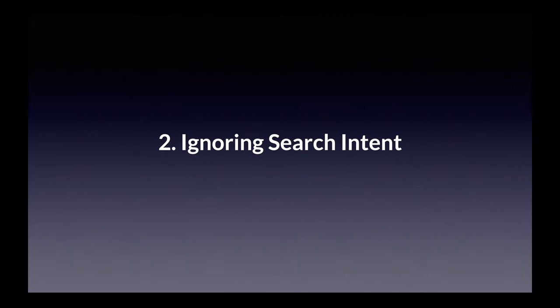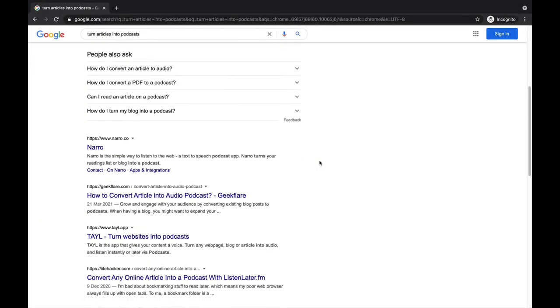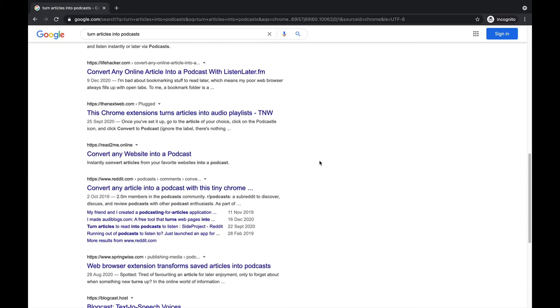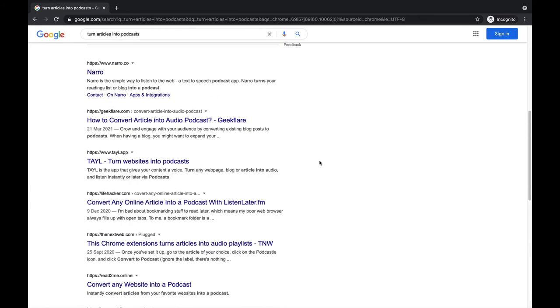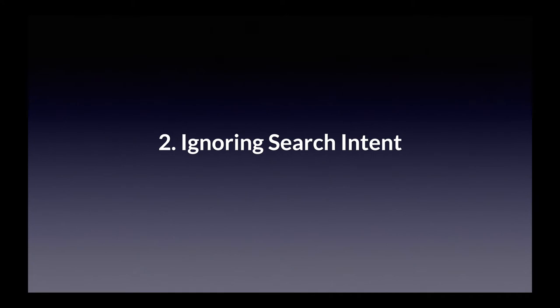Search intent is about understanding exactly what searchers are looking for when they type a search query into Google. For example, I wanted to write an article about how to turn articles into podcasts — covering equipment, software, and how to choose a hosting platform. But when I typed my target keyword into Google, the results were all about AI applications for converting text into audio. When people search 'turn articles into podcasts,' they aren't looking for the kind of article I wanted to write. If I had gone ahead, it would never have ranked because it failed to address the search intent.